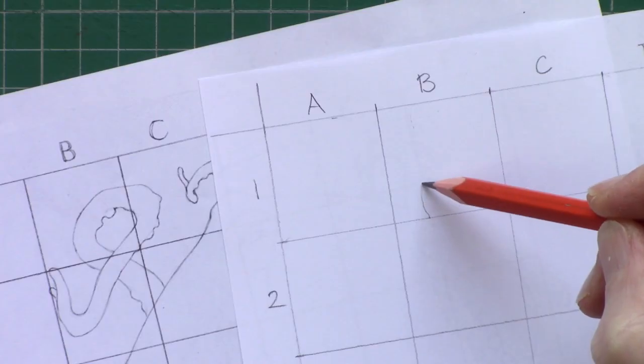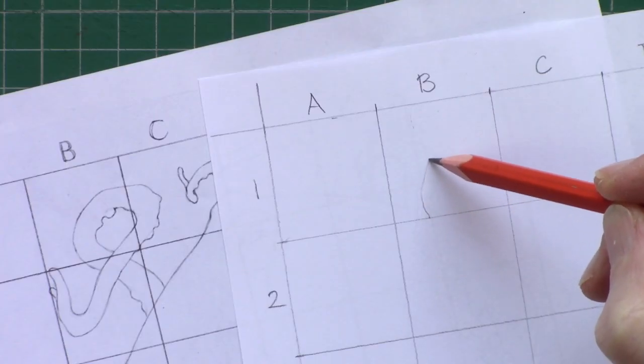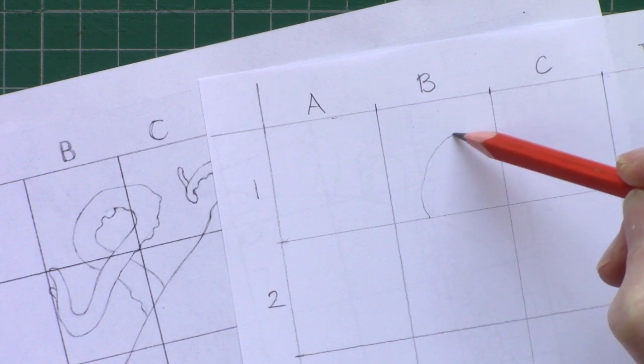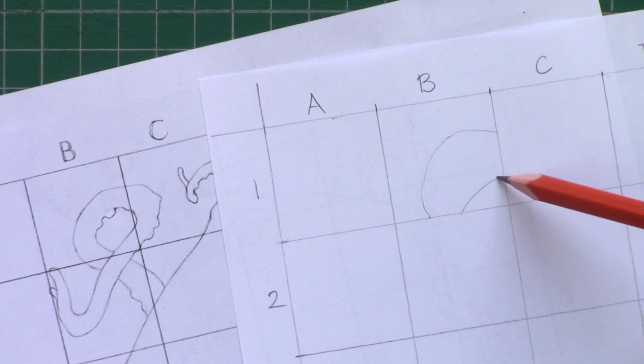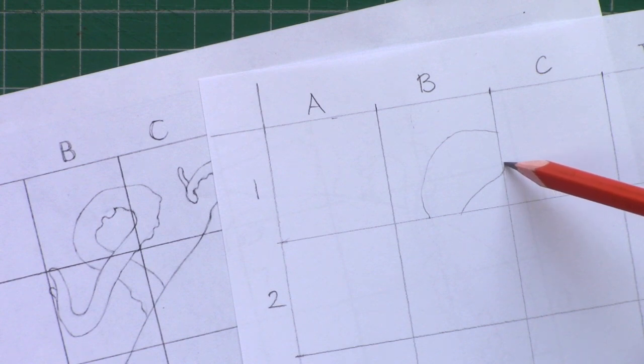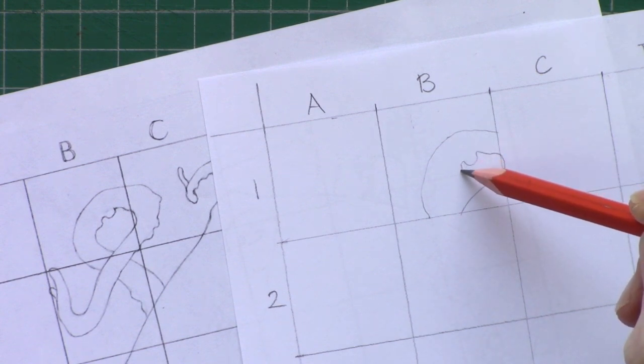Now we need to transfer the outline of the octopus in the grid on our printout to the grid that we've just drawn. Now using the printout of the octopus and grid, I carefully copy what I see in each square into the new grid that we've just drawn.